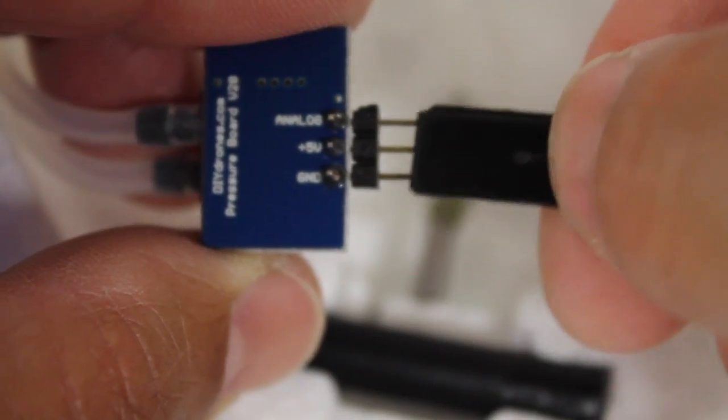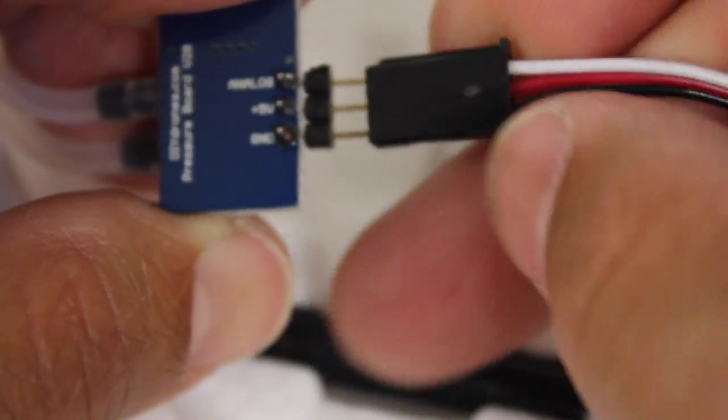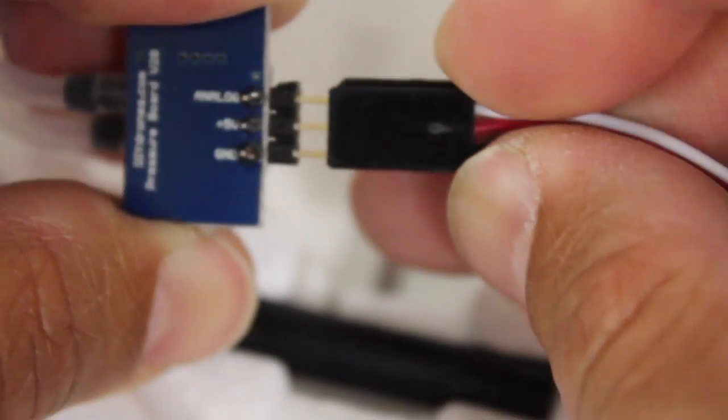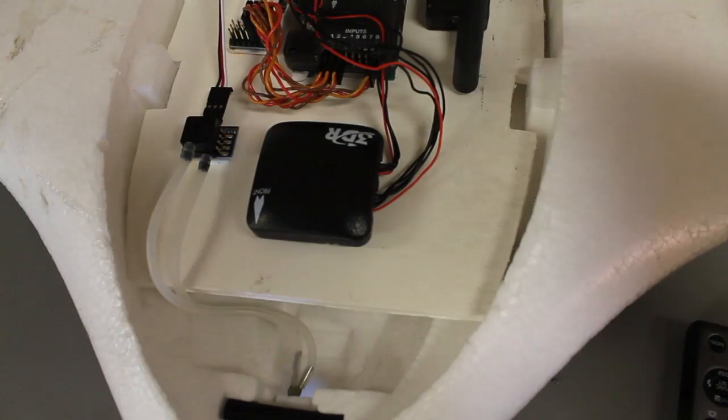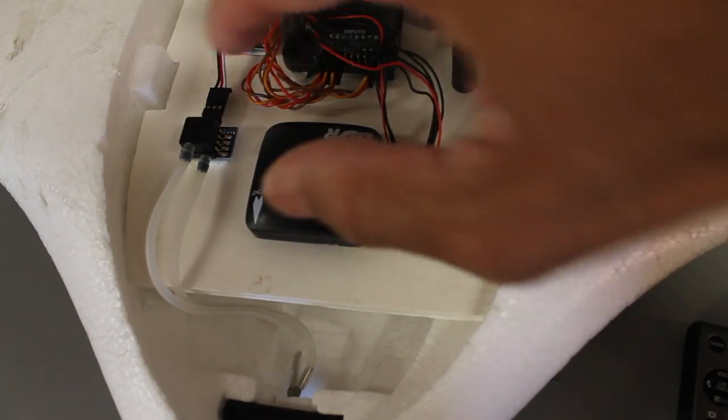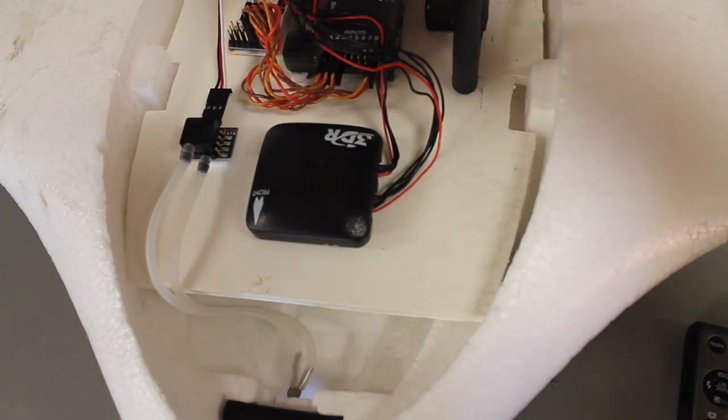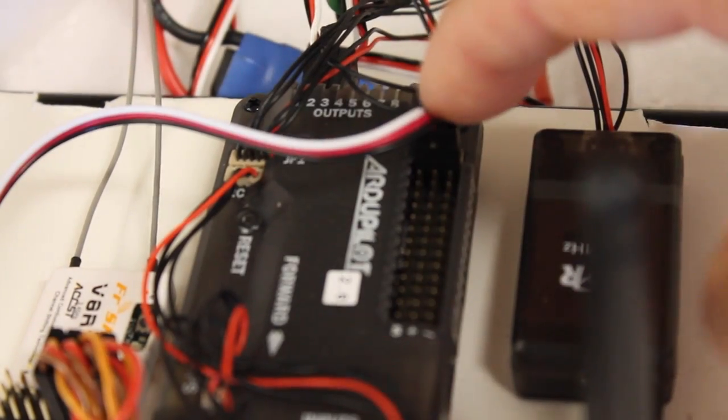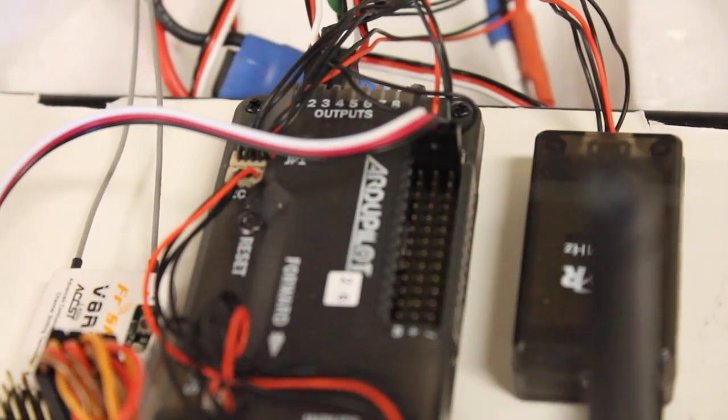Connect our servo cable so we have analog, five volts and ground. Now our airspeed sensor is hooked up, mounted inside the plane, connected to the A0 port on the APM.